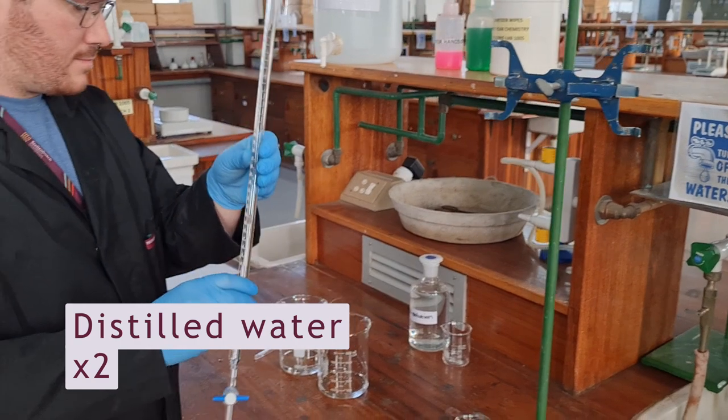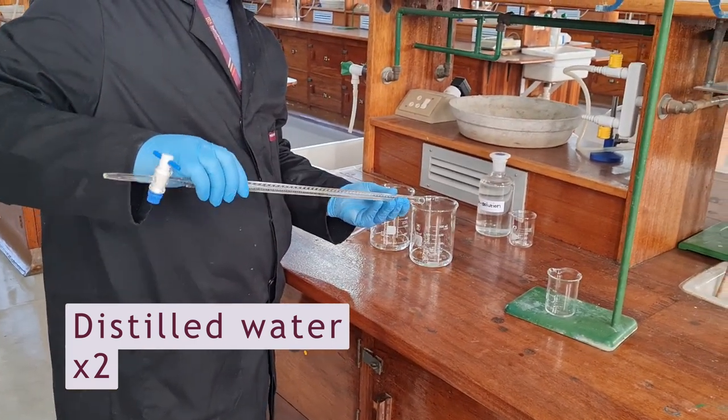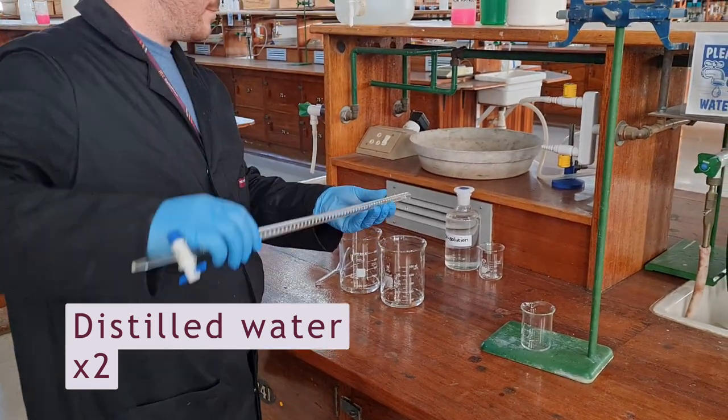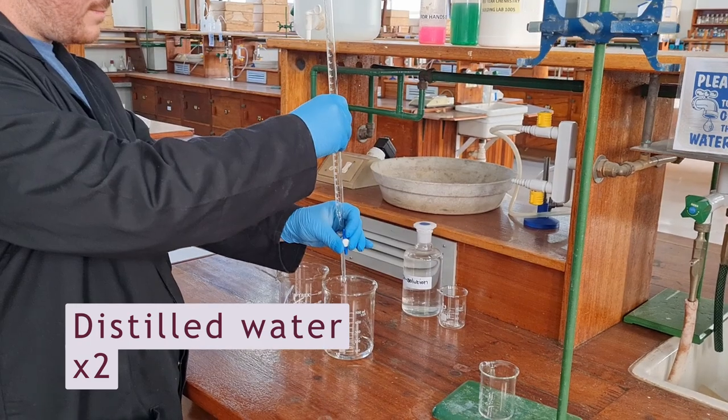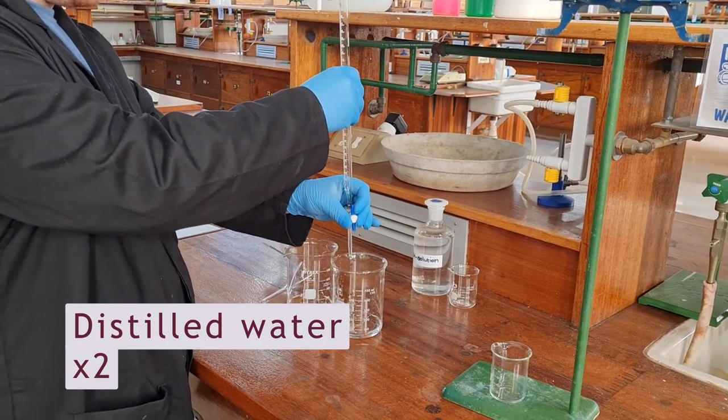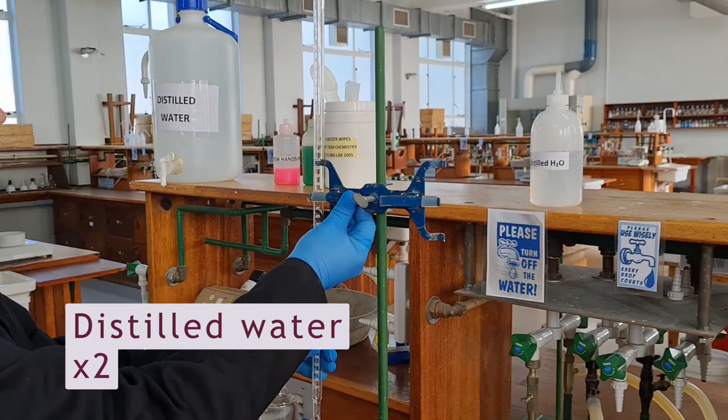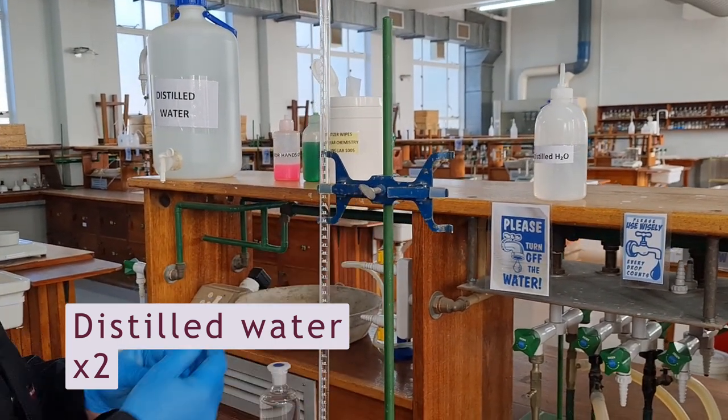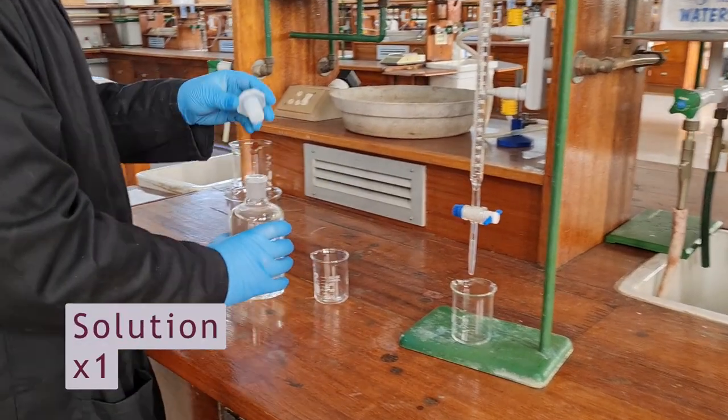Then remove the funnel and carefully tip the burette on its side while turning it in your fingers so that the solution comes in contact with almost the entire length of the burette. Invert it while continuing to turn it until the solution runs out into a waste container. Repeat this step once more for distilled water and then again with the solution.